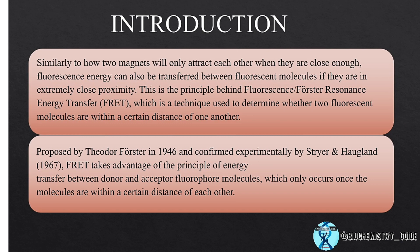If we keep two magnets close, we can see the force of attraction. In the same way, we transfer fluorescent energy. If we keep two fluorescent molecules within a certain range, there is a transfer of energy. This is the acceptor and donor theory — the donor's fluorescent energy is absorbed by the acceptor, and the acceptor does fluorescence, while the donor molecule does not fluoresce.